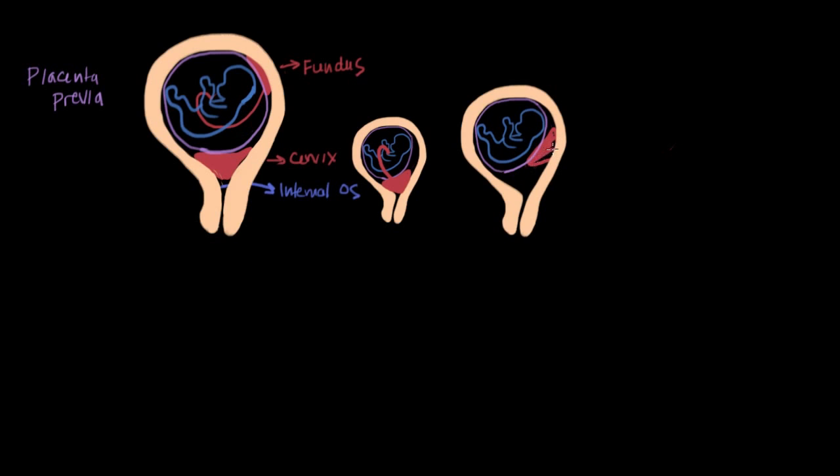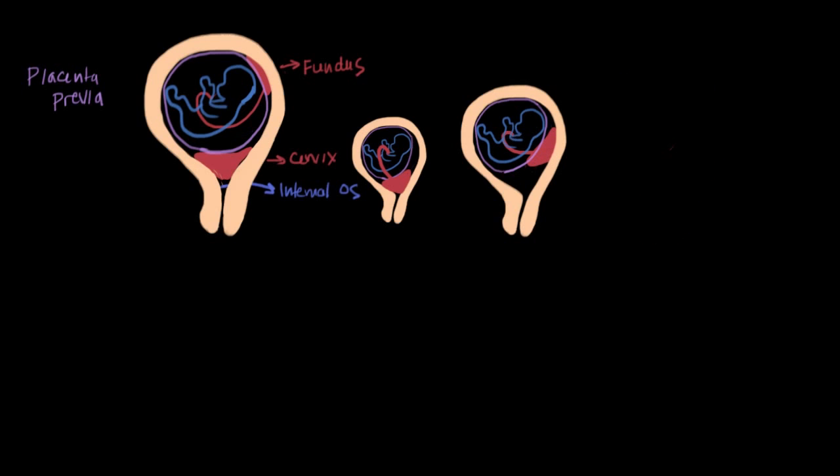And with the stretching out of the uterus, the placenta gets dragged along to a higher position. So if a woman is found to have placenta previa early on in the course of a pregnancy, as the uterus grows, the condition tends to self-resolve. And the placenta tends to find itself in a normal position by the end of the pregnancy.